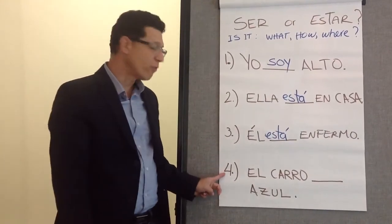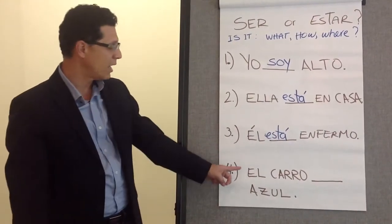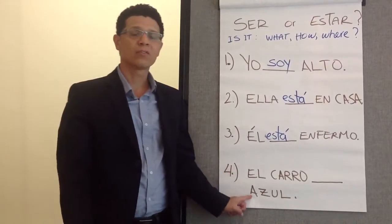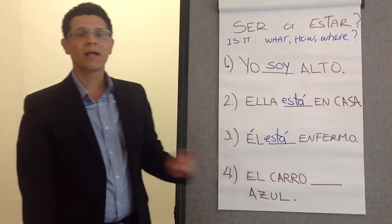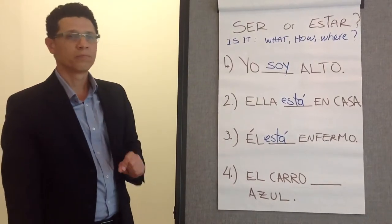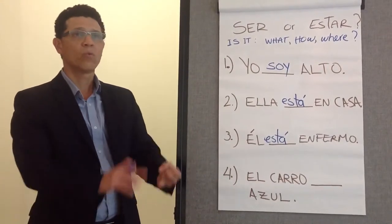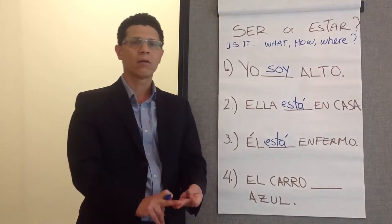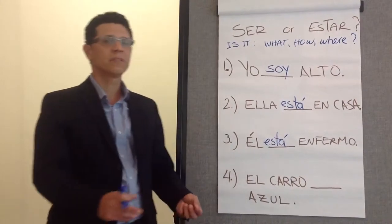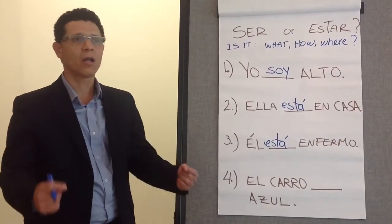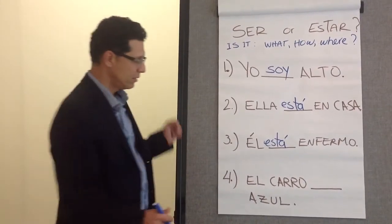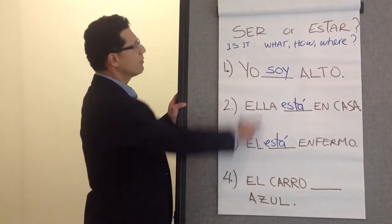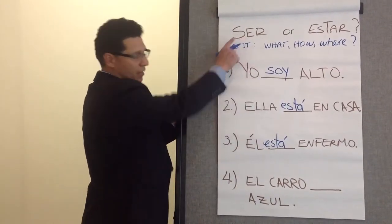Example number four: 'El carro __ azul' — the car is blue. Is it what color it is? How color it is? Or where color it is? Obviously, it's what color it is. Therefore, you have to use ser.